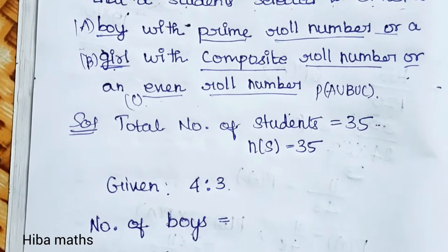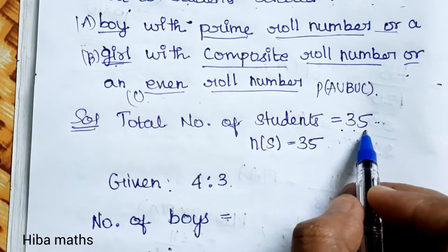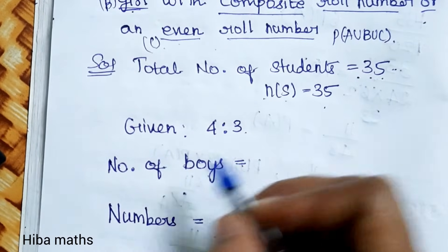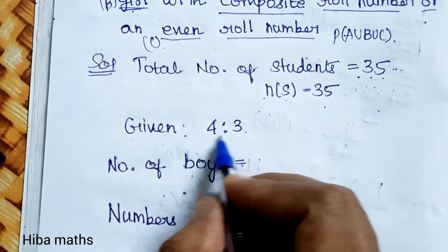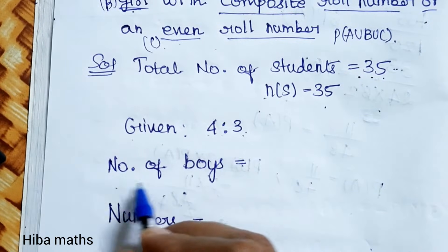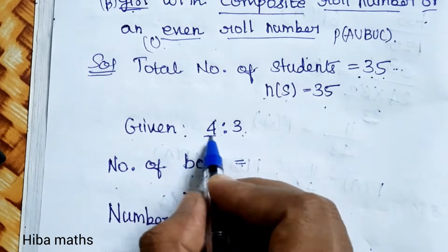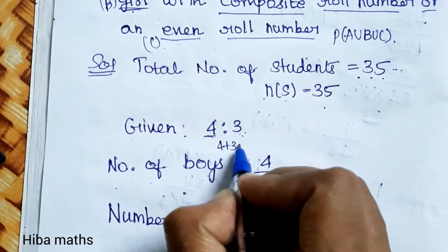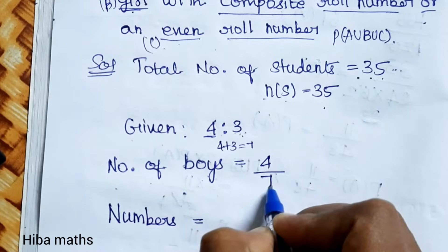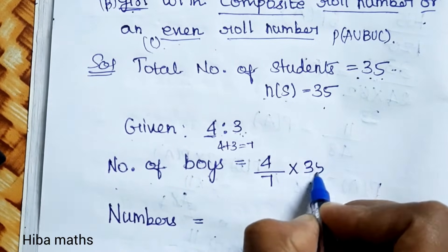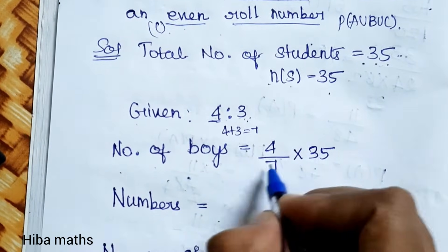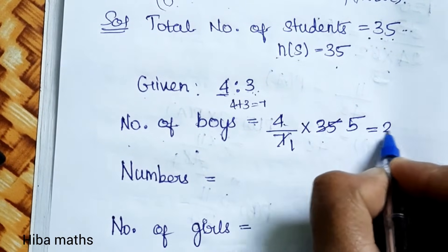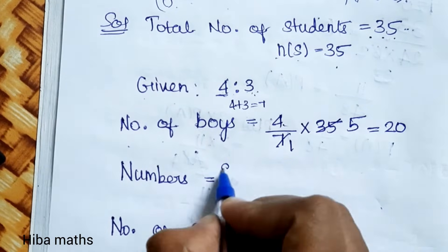Total number of students is 35, so n(S) = 35. Given ratio is 4 is to 3. Number of boys = 4 divided by total ratio 4 plus 3, which is 7, multiplied by total number of students 35. So 4 times 5 gives us 20 boys.